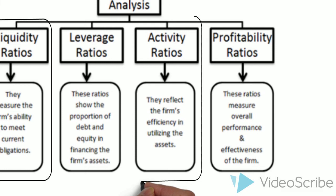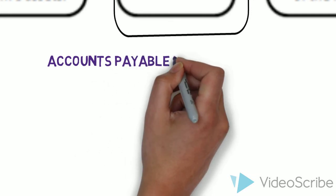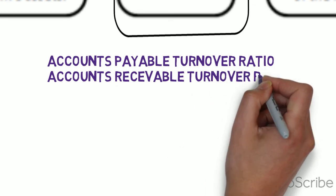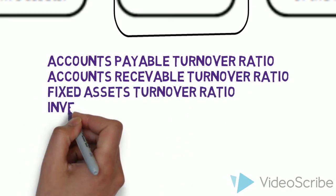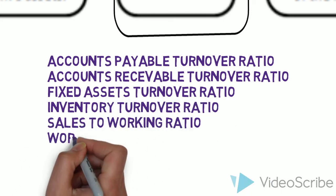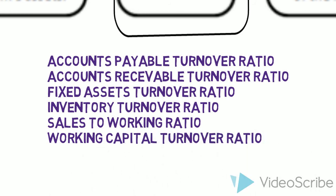Two: Activity ratios. These ratios are strong indicators of the quality of management since they reveal how well management is utilizing company resources. These include: A - accounts payable turnover ratio, B - accounts receivable turnover ratio, C - fixed assets turnover ratio, D - inventory turnover ratio, E - sales to working capital ratio, F - working capital turnover ratio.